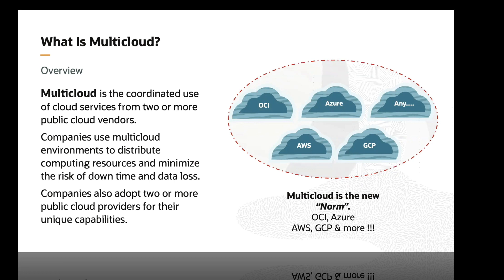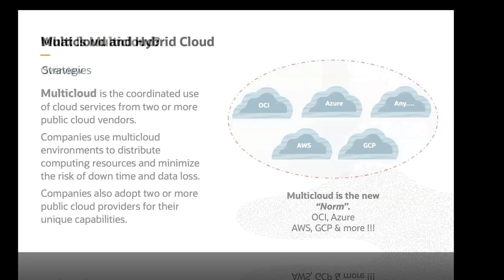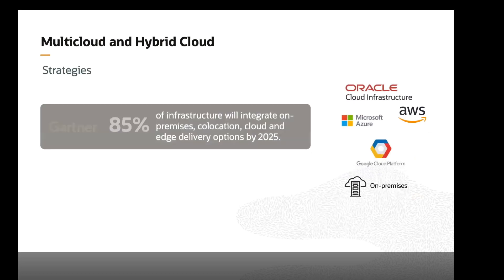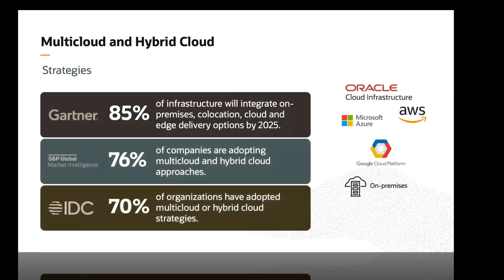This helps organizations choose the right services and create the best business value. For multi-cloud solutions, we can see analysts' reviews on multi-cloud strategies: Gartner, S&P, and IDC have recognized the trend of increasing adoption of multi-cloud and hybrid cloud technologies. At OCI, we are seeing most organizations distributing their workloads across multiple cloud providers and on-premise infrastructure because of cost advantages, capability differences, and other factors.